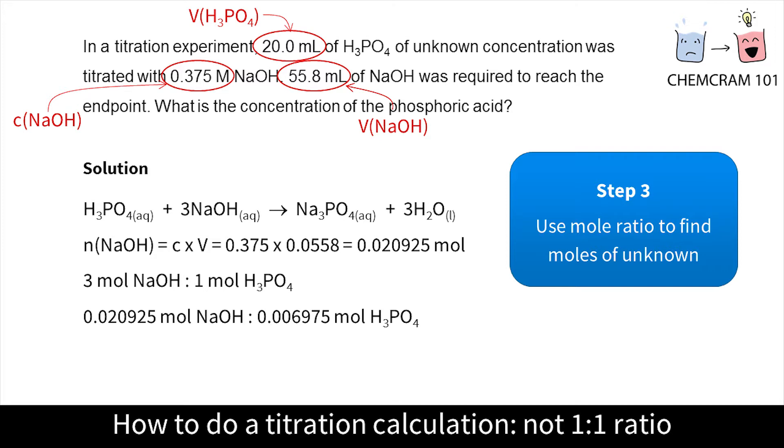Be really careful with this step. It's very easy to multiply instead of divide and the other way around. Double check by looking at the balanced chemical equation. It tells us that we need three times more sodium hydroxide than phosphoric acid so we should have calculated that we have more moles of sodium hydroxide, which we do.